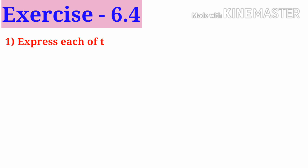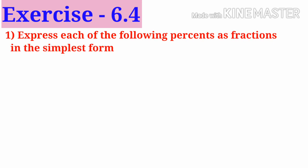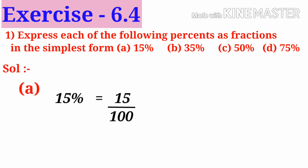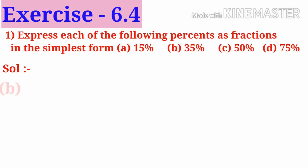Now let us do the first problem: express each of the following percents as fractions in the simplest form. A: 15 percent, that is 15 by 100. On simplification by 5, we get 3 by 20, which is the simplest form.